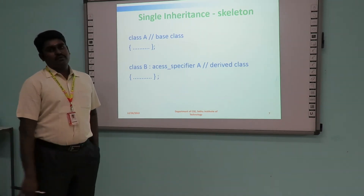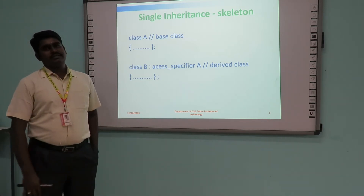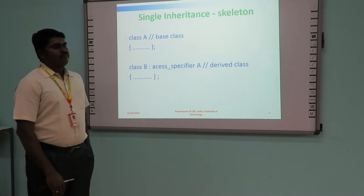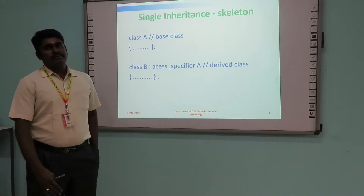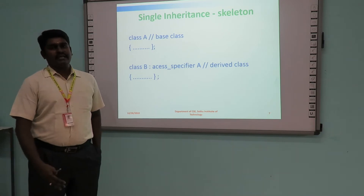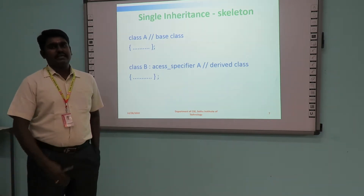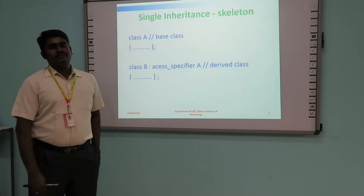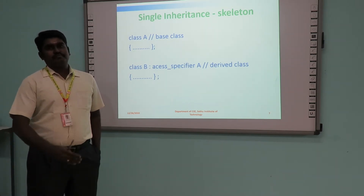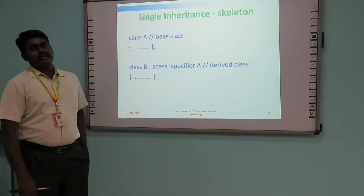This is the outline or skeleton of single inheritance. Here we have two classes: the first one is the base class and the next one is the derived class. Derived class B will have both the members of the base class and the derived class when we create an object of class B. After creating the object using class B, the object will have both the properties of A and B.